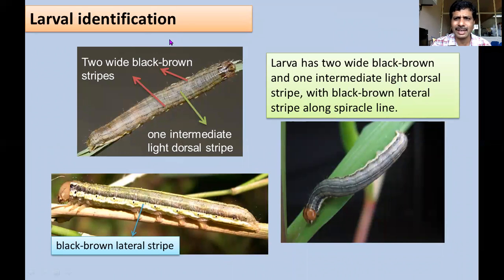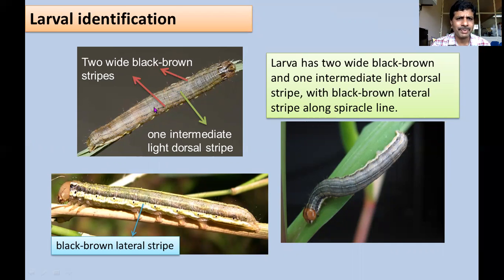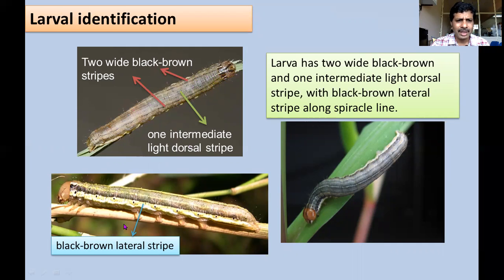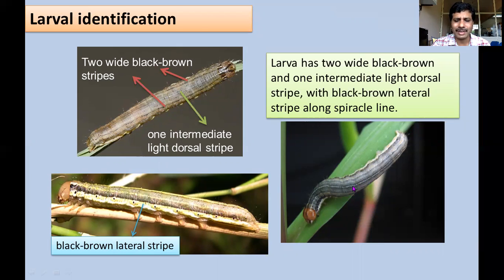Identification of larvae and adults is very important because there are many armyworm species which look similar. For larvae: the body is fleshy and you can find a light-colored dorsal stripe in the median region. There are two wide black-brown stripes in the lateral region, and from the lateral side you can find a black-brown lateral stripe just above a particular line. Using these dorsal and lateral stripes, we can identify the larvae of Mythimna separata.